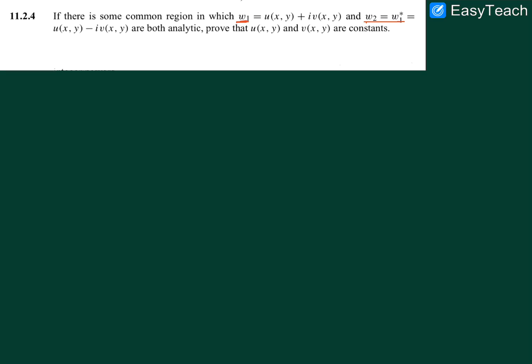We are given two complex functions w1 which is given in terms of u and v, and w2 which is the complex conjugate of w1, so it's coming with a minus sign in front of i and v.